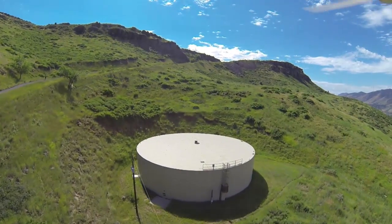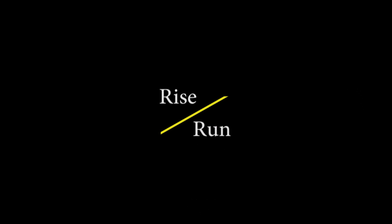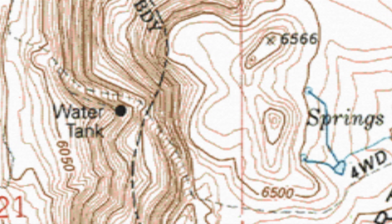Slope is basically the rise over the run — the elevation change over the horizontal distance change. To go from this point to this point in a straight line, covering this area of consistent slope for this example, we start at 6,060 feet and end up at 6,250 feet for a 190-foot elevation climb.